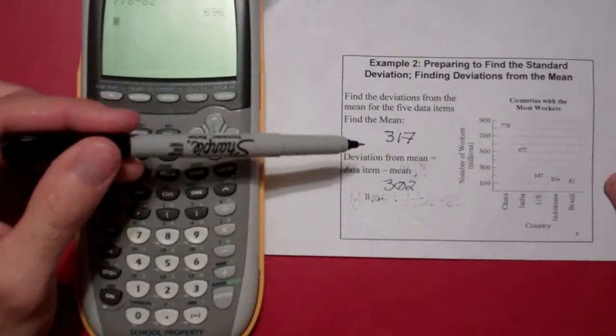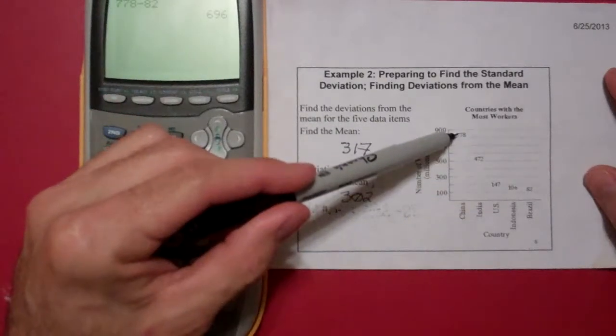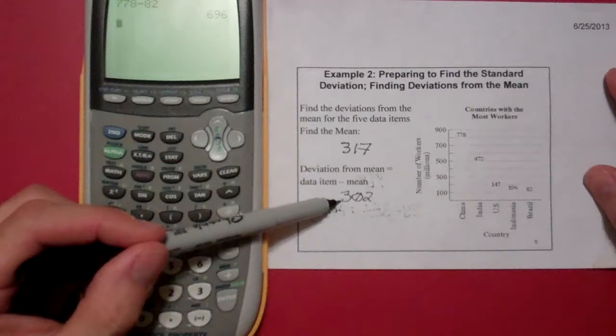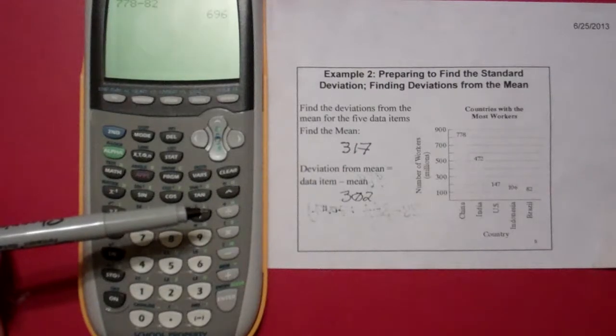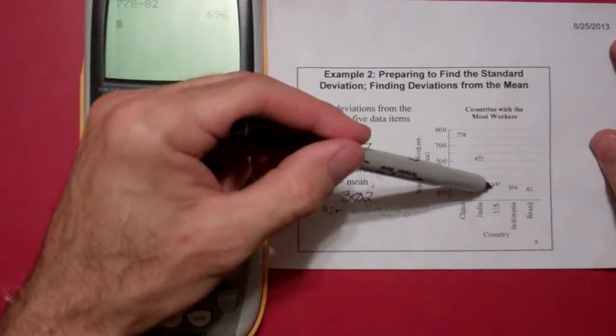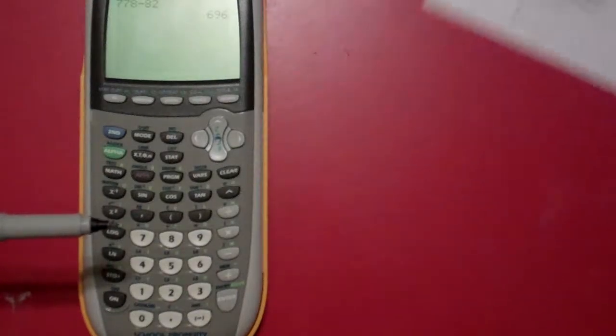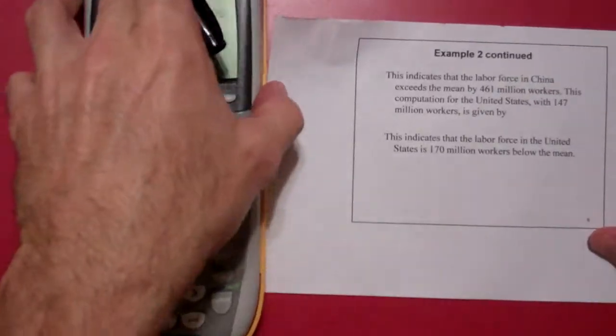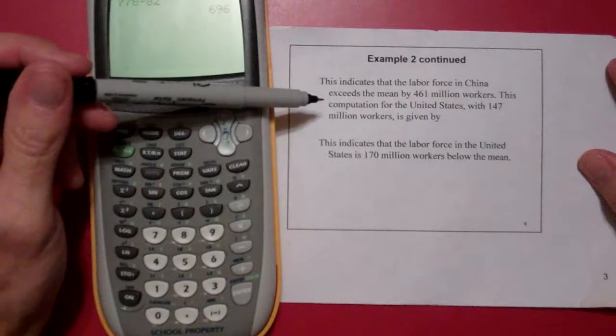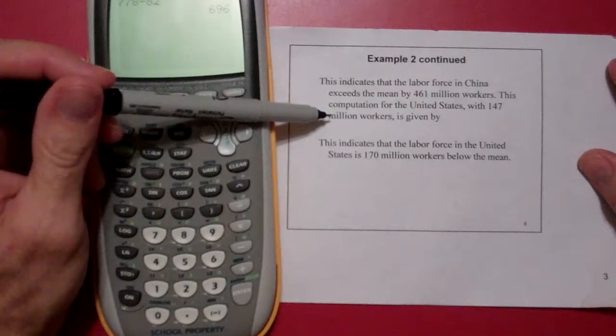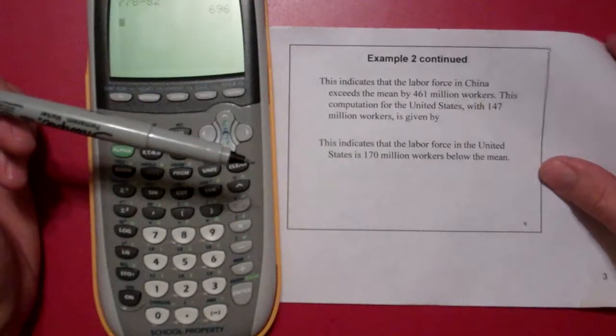The mean is at 317. You can see there's only two values above it. And the standard deviation from the mean is 302. So that's quite a bit of spread to get from that middle to most of the data items. As you can see, the US, Indonesia, Brazil are really low compared to India and China. This chart sort of indicates that the labor force in China exceeds the mean by 461 million workers. And in this computation for the United States with 147 million workers, the United States is 170 million workers below the mean, just subtracting those values.